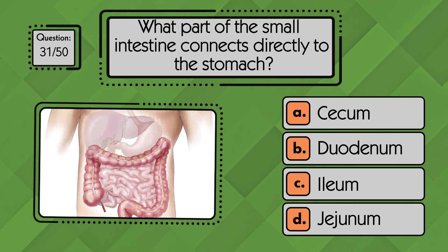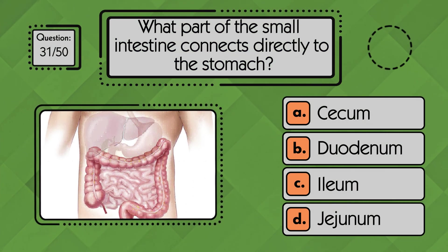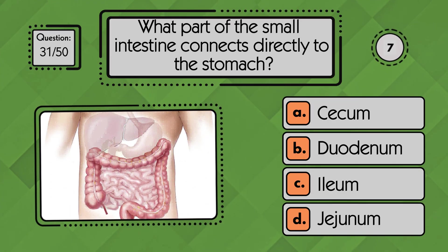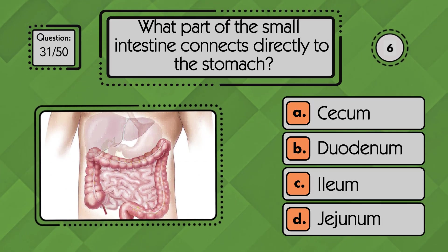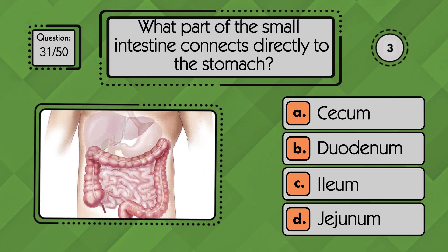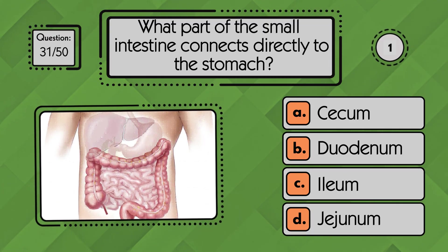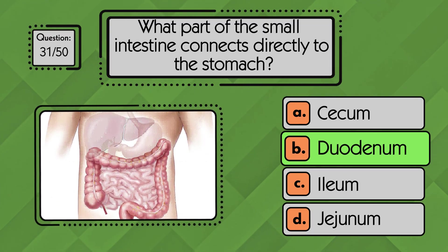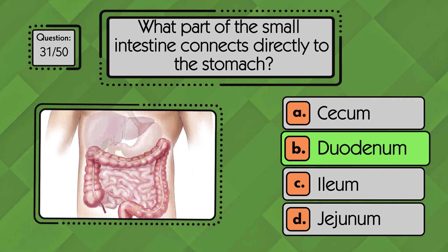What part of the small intestine connects directly to the stomach? The duodenum connects to the stomach, serving as the first segment of the small intestine.